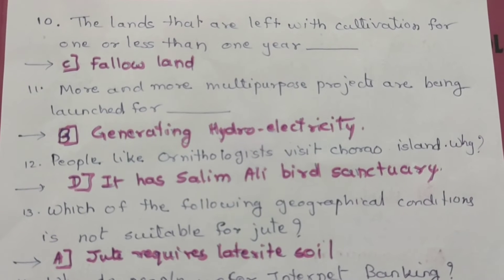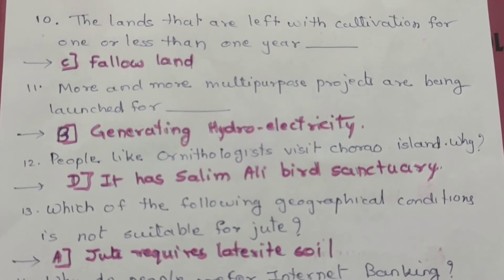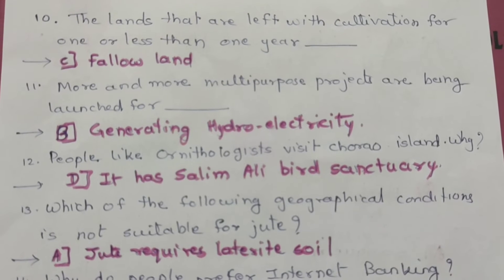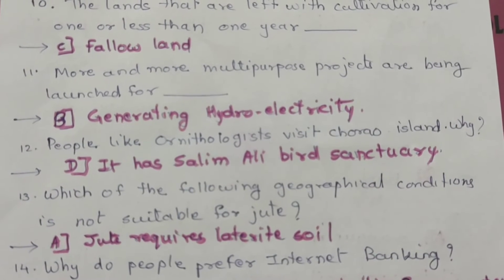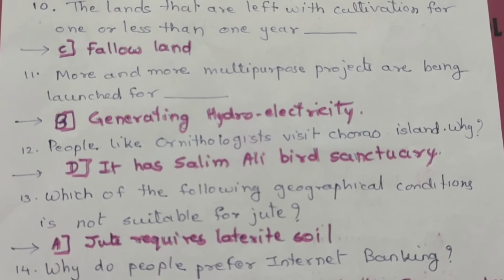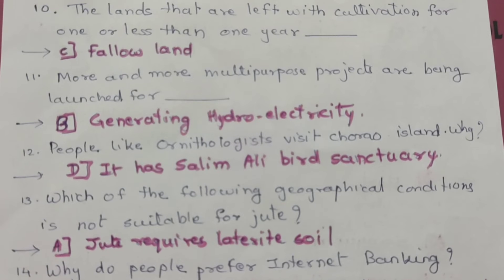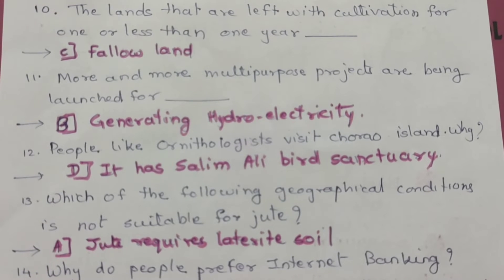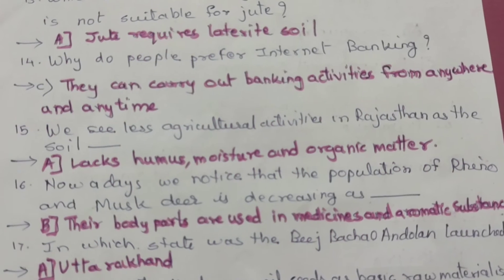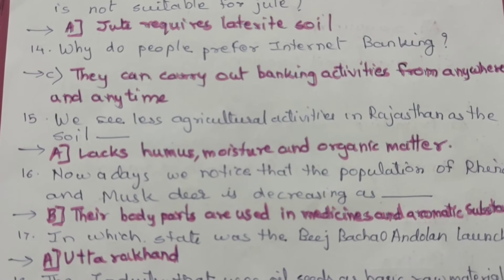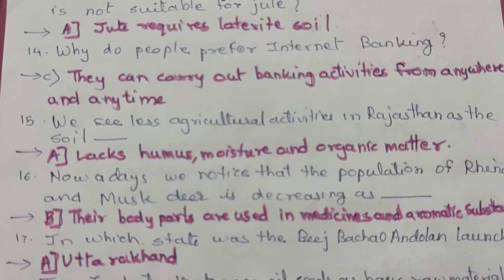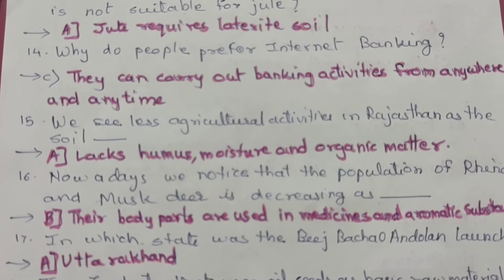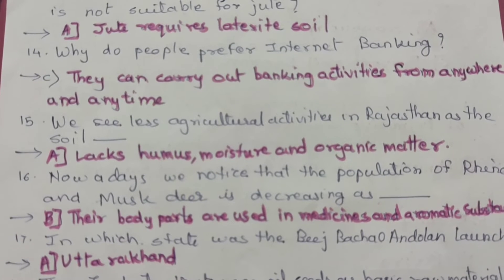Question 13: Which of the following geographical conditions is not suitable for jute? The correct option is A — jute requires alluvite soil.